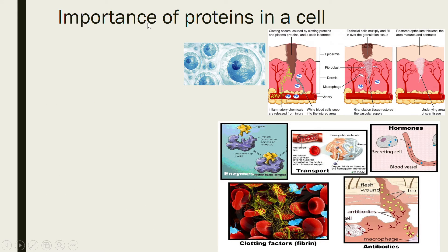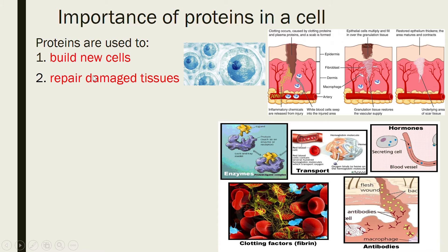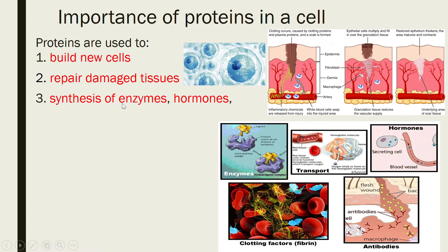Now let's look at the importance of proteins in a cell. Proteins are used to build new cells and in the repairing of damaged tissues. For example, if there is a wound, the injured area will heal — new tissues will be formed — and proteins are responsible for this repair.